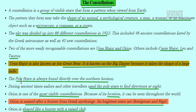Ursa Major is also known as the Great Bear. It is also known as the Big Dipper because it takes the shape of a ladle. If your mom has cooked dal or any curry, how do you serve it in your plate? You use a ladle — so Ursa Major looks like a ladle. And then there is also something called the Pole Star.